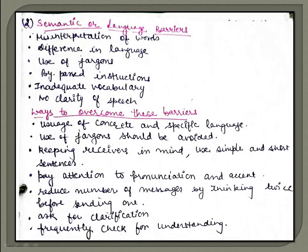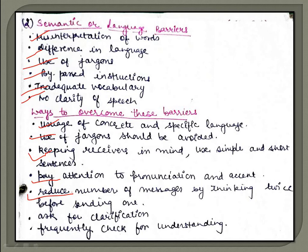Semantic or language barriers arise from misinterpretation of words, difference in language, use of jargons, bypass instructions, inadequate vocabulary, and lack of clarity of speech. To overcome them: use concrete and specific language appropriate to the audience, avoid jargons and difficult vocabulary if the audience has limited vocabulary, use simple and short sentences, pay attention to pronunciation and accent, reduce unnecessary messages, ask for clarification if in doubt, and frequently check for understanding.